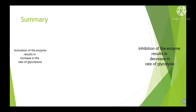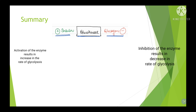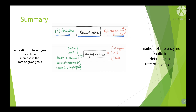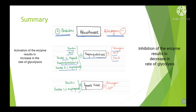To summarize the regulation: glucokinase is activated by insulin and inhibited by glucagon. Phosphofructokinase is activated by insulin, AMP, fructose-6-phosphate, phosphofructokinase-2, and fructose-2,6-bisphosphate, and is inhibited by glucagon, ATP, and citrate. Pyruvate kinase is activated by insulin and fructose-1,6-bisphosphate, and is inhibited by glucagon and ATP.